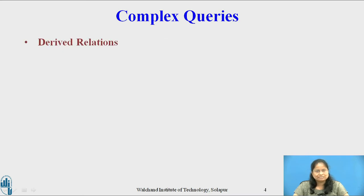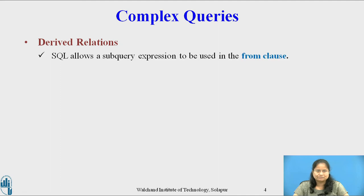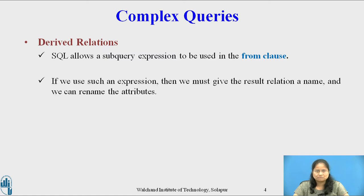Consider the derived relation. SQL allows a subquery expression to be used in the FROM clause. If we use such an expression, then we must give the result relation a name and we can rename the attributes. We do this renaming by using the AS clause.